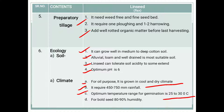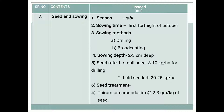Linseed is a cool season crop, also known as a winter season crop. The season is rabi. Time of sowing is the first fortnight of October — from 1st to 15th October. Sowing methods are drilling and broadcasting; dibbling is not possible due to the very small seed size. Sowing depth is 2 to 3 cm.